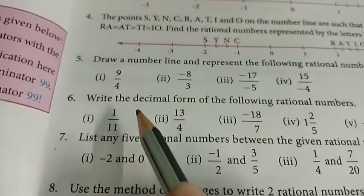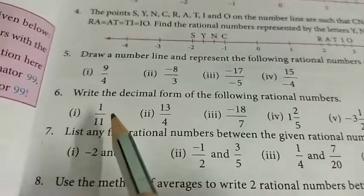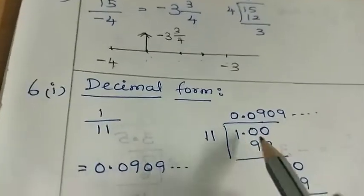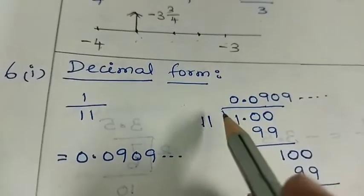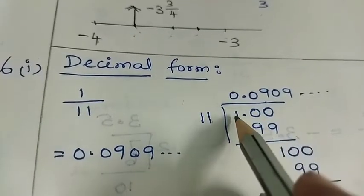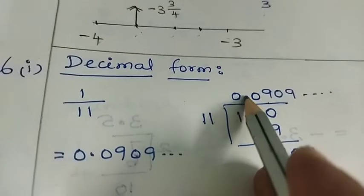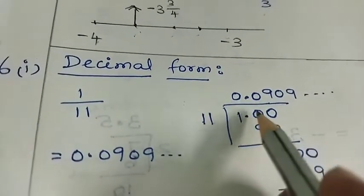6th sum: write the decimal form of the following rational numbers. 1 by 11. As it is, 11 will divide. We have to put a decimal point here.